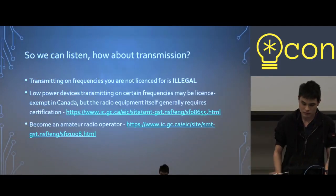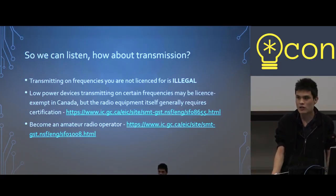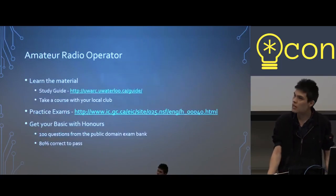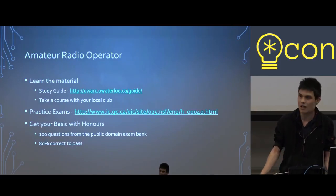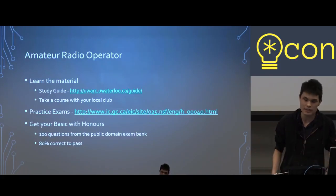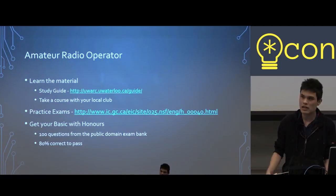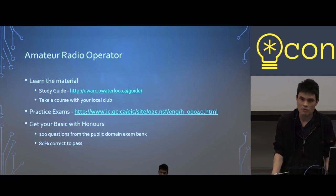Now let's talk about transmission and licensing. Transmitting on frequencies you are not licensed for is illegal — full stop, don't do it. Low-powered devices transmitting on certain frequencies may be license-exempt, which is why we can use a cell phone or turn on a TV. But any other radio equipment generally requires a license. The most accessible license for transmitting on the air is an amateur radio operator license. To become one, study the material — we have a great study guide at uwrc.urlo.ca/guide. You can also take a course with your local club and take practice exams. The exam draws 100 questions from a public-domain bank, so you can do as many sample exams as you want. This is hosted by the Canadian government, and it's very similar in the US and elsewhere. To get basic with honors, the standard level, you need to get 80 out of 100 questions correct.